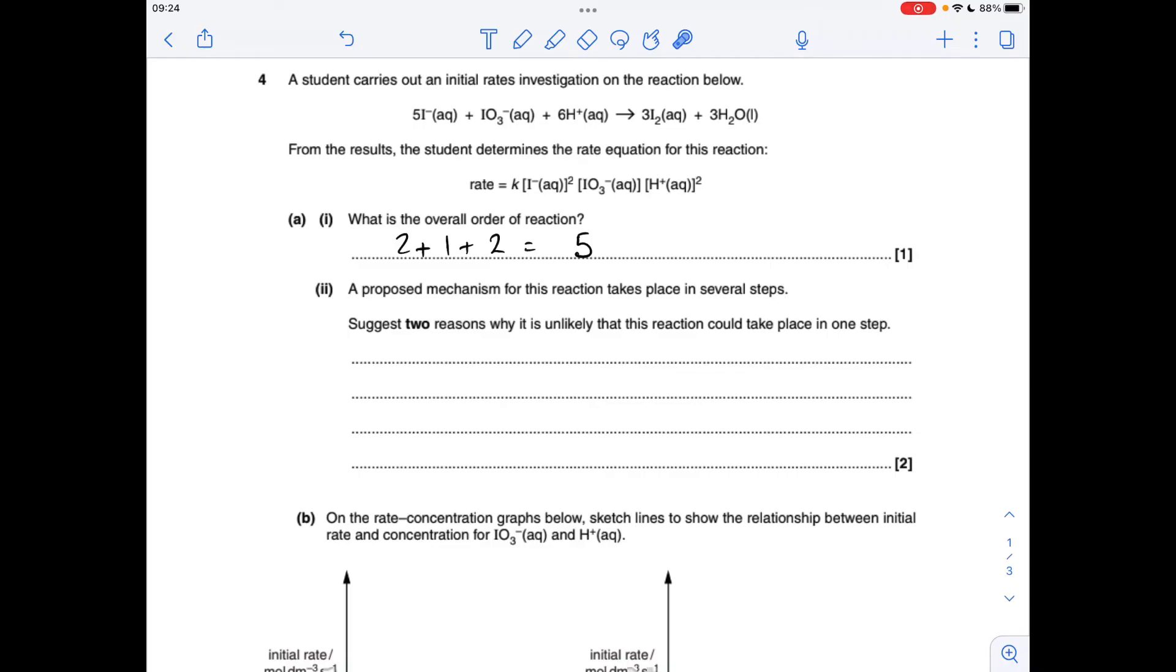OK, so first question, what's the overall order of the reaction? Well, the overall order is the sum of the individual orders. So we've got 2 plus 1 plus 2, so 5th overall.